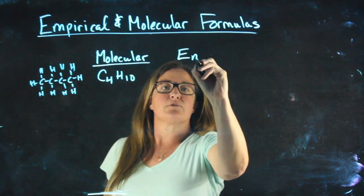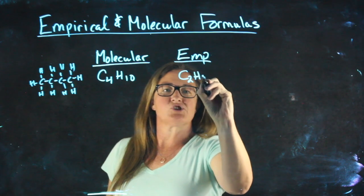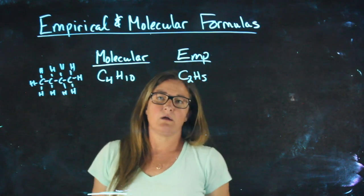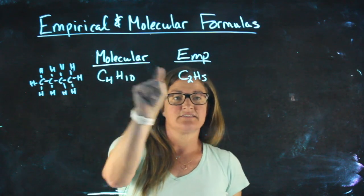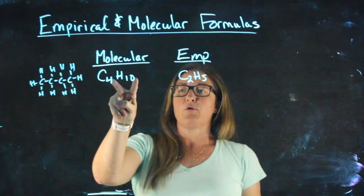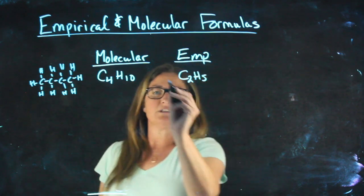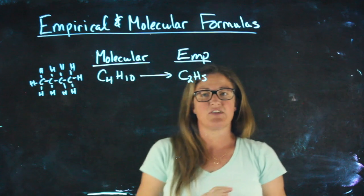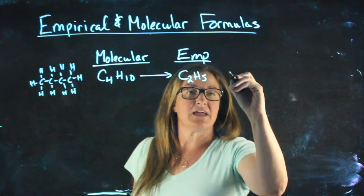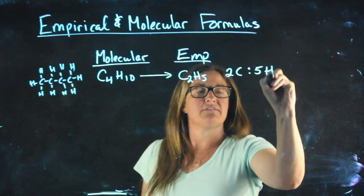Its empirical formula is C2H5. What did I do to this to get that? I reduced it. Both 4 and 10 are divisible by 2, so if I wanted to go from there to there, dividing everything by 2, what this tells me is that I have a ratio of 2 carbons for every 5 hydrogens.